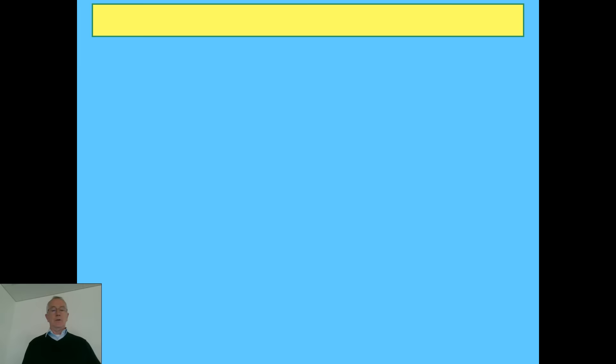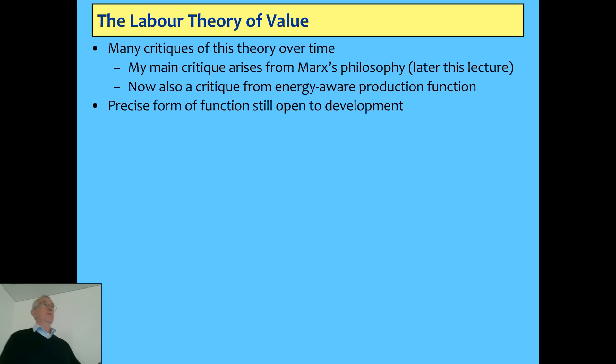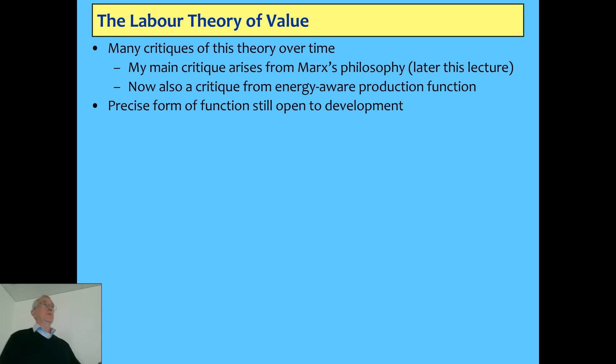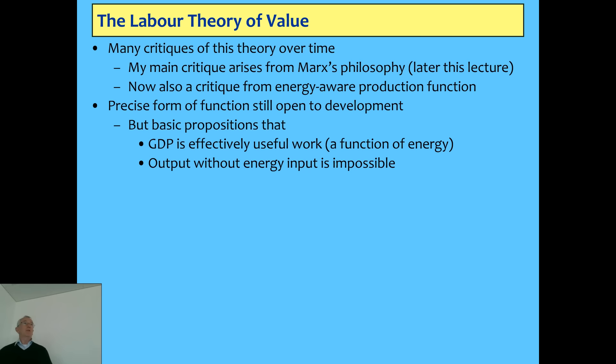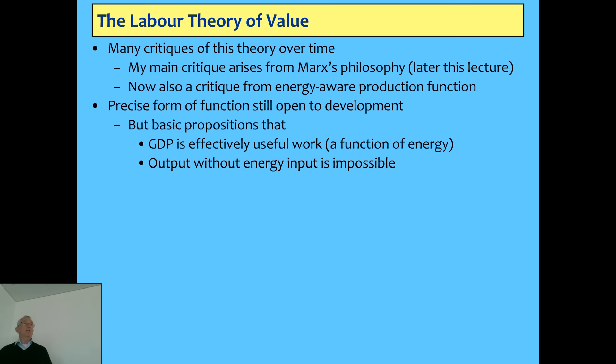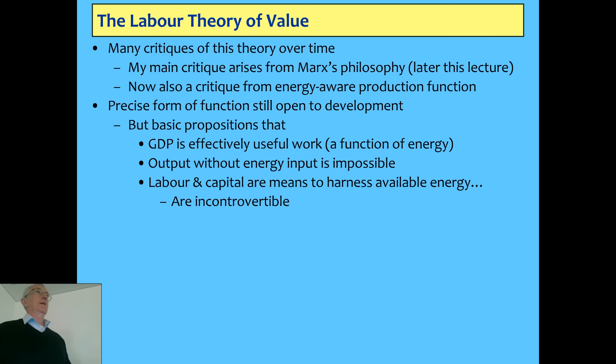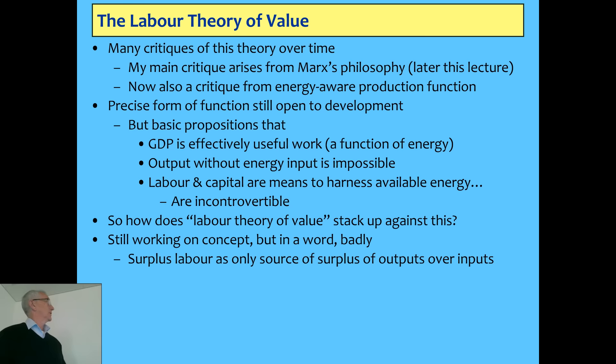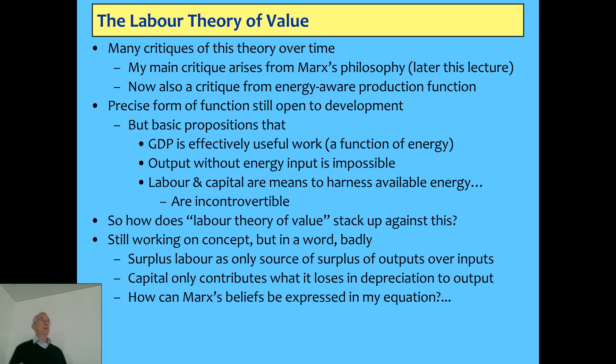Now I want to look at this from the point of view of the energy production function I developed last week. The basic idea is that GDP is effectively useful work, which is a function of energy — taking available energy and turning it into something that does what you want. Output without energy is impossible; you simply can't produce output unless you're harnessing energy. Labor and capital are both means to harness that energy. That brings us back to the argument: if your theory is inconsistent with thermodynamics, it should be thrown out — which is fundamentally what I'm saying the labor theory of value should do.